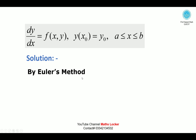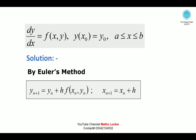The solution by Euler's method is: y_{n+1} = y_n + h·f(x_n, y_n), and x_{n+1} = x_n + h. This is the solution of the initial value problem in the interval a to b.